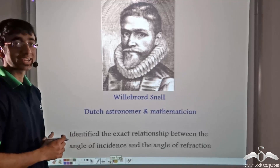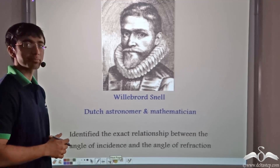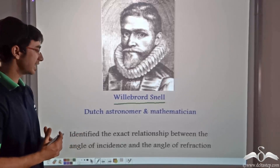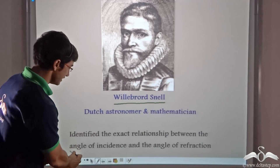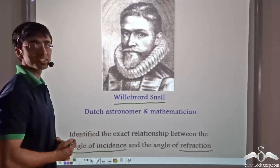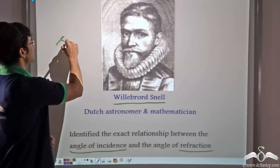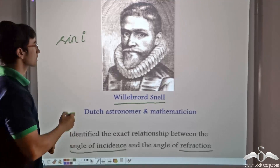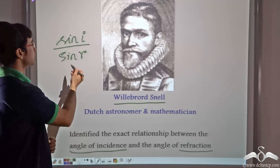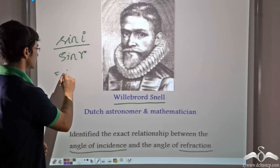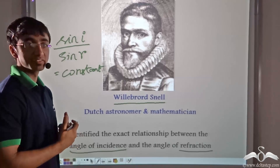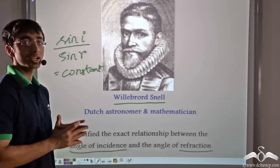This relationship was first identified by a Dutch astronomer and mathematician, Willebrod Snell. Willebrod Snell was responsible for finding the exact relationship between the angle of incidence and the angle of refraction — that the ratio of sine i to sine r is a constant for a given pair of media. In our previous case, the pair of media were air and glass.